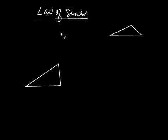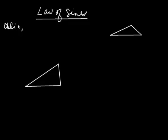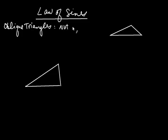A good question would be: how do we solve a triangle when it's not a right triangle? We have some terminology for that. We're dealing with what are called oblique triangles. In math, when we talk about an oblique triangle, all we mean is that there's not a right angle — none of the angles is 90 degrees.